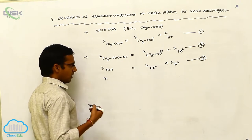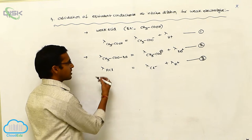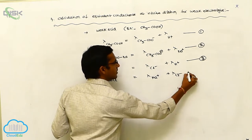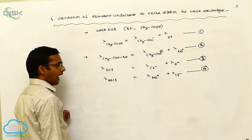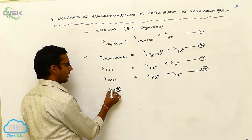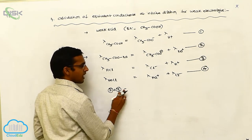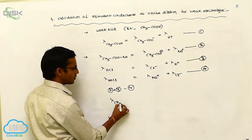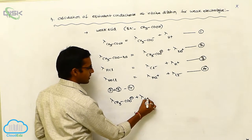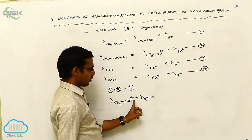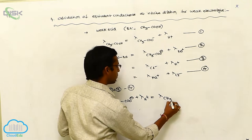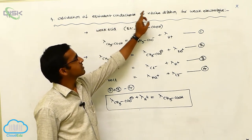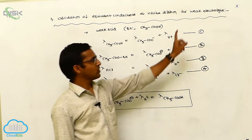Another electrolyte considered is sodium chloride, NaCl, which gives Na plus and Cl minus — this is equation 4. Adding equation 2 and equation 3, then subtracting equation 4, we get the final equation: lambda CH3COO minus plus lambda H plus equals the equivalent conductance of CH3COOH. This is the calculation of equivalent conductance at infinite dilution for the weak electrolyte acetic acid.